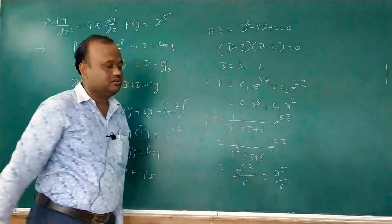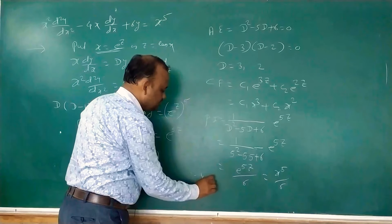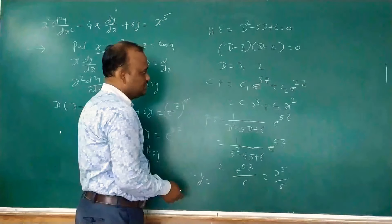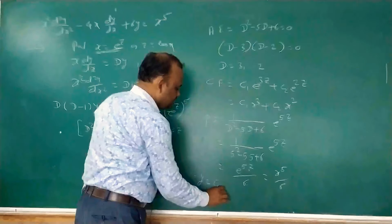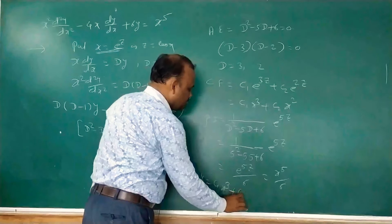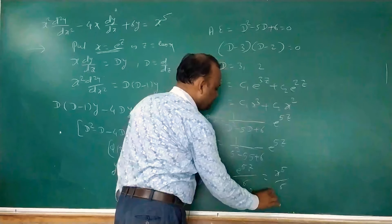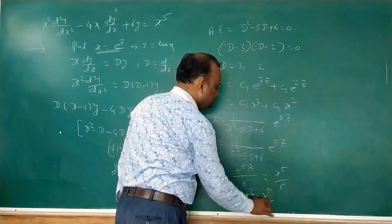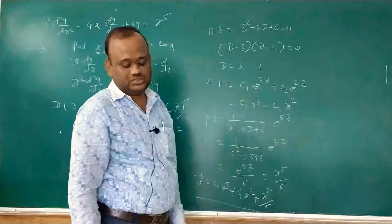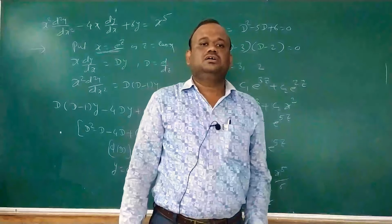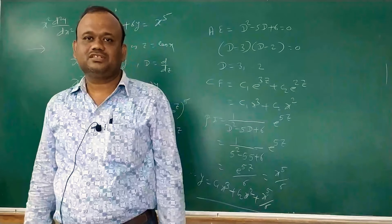Therefore the complete solution of the given differential equation is y = c₁x³ + c₂x² + x⁵/6. These are some problems on Cauchy's homogeneous equation. You can solve the remaining problems. Thanks for watching.